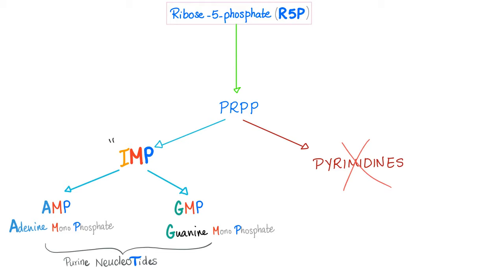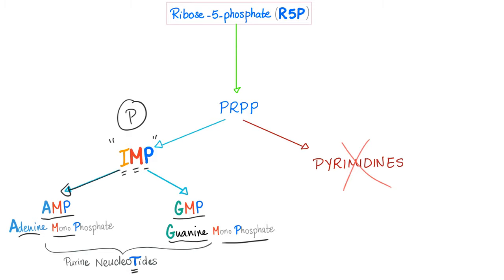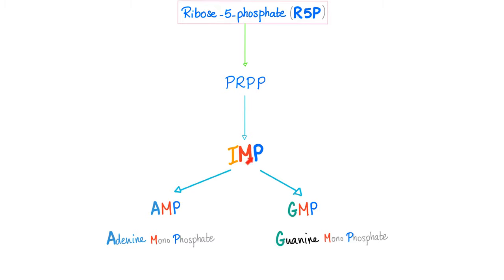We start with IMP — inosine monophosphate — which has one phosphate group. Then IMP gives you AMP (adenine monophosphate) or GMP (guanine monophosphate). These are your nucleotides because they have phosphate. The pathway is: ribose-5-phosphate → PRPP → IMP → AMP or GMP. This is the purine de novo synthesis pathway.